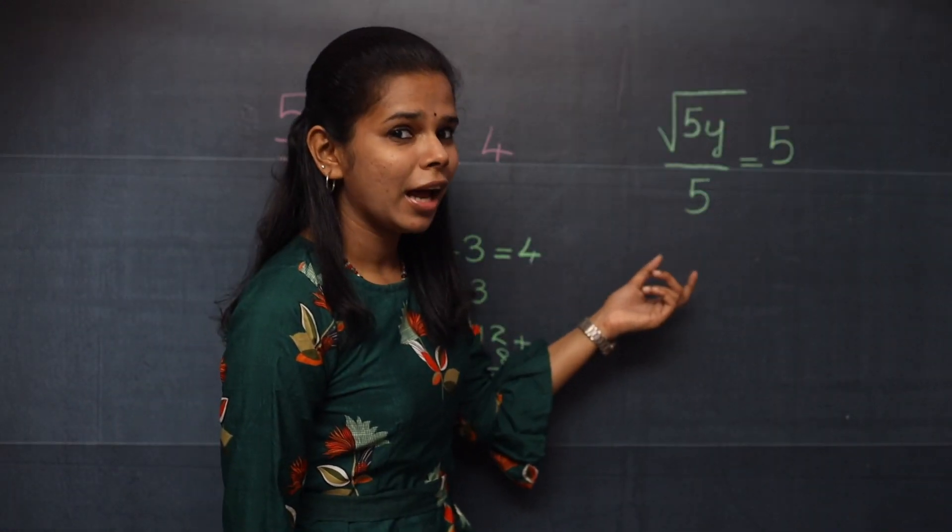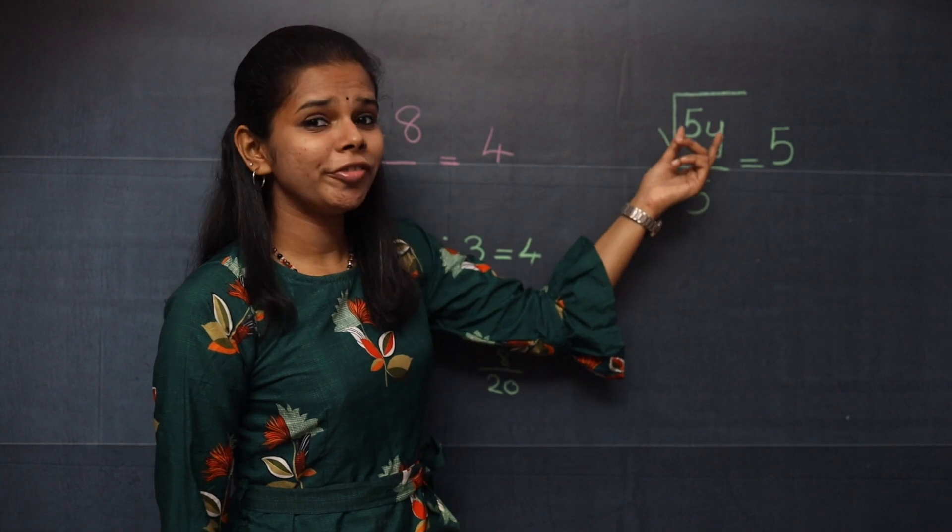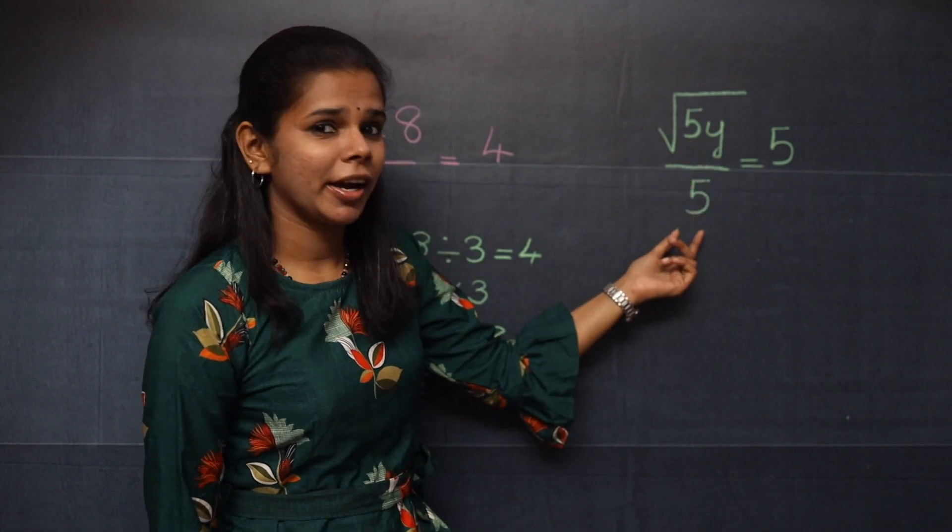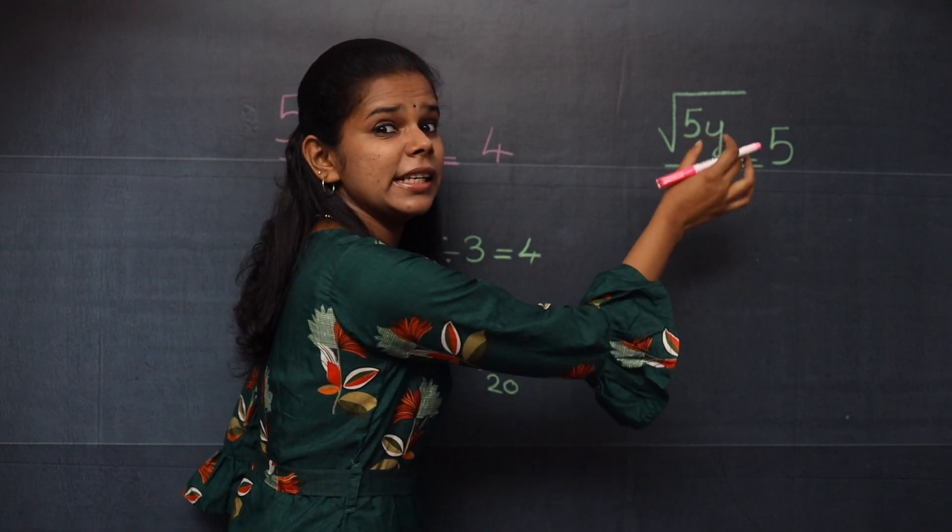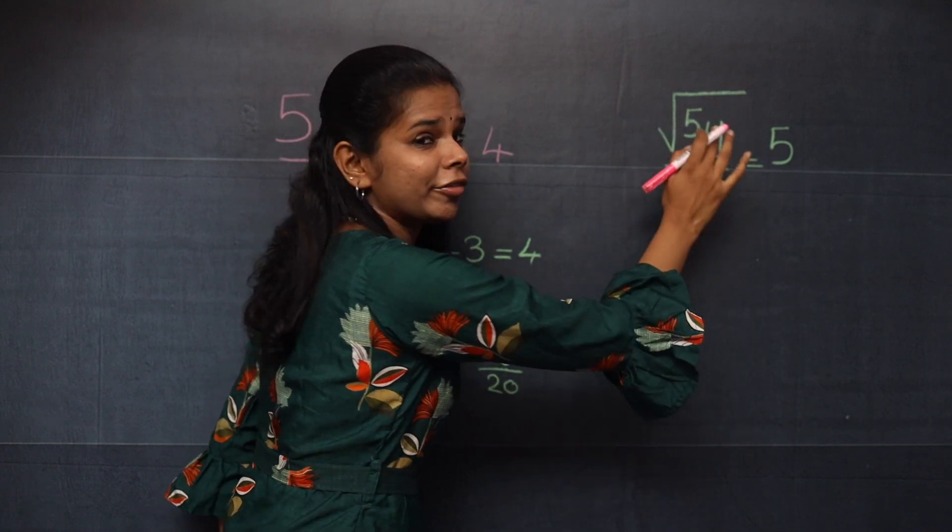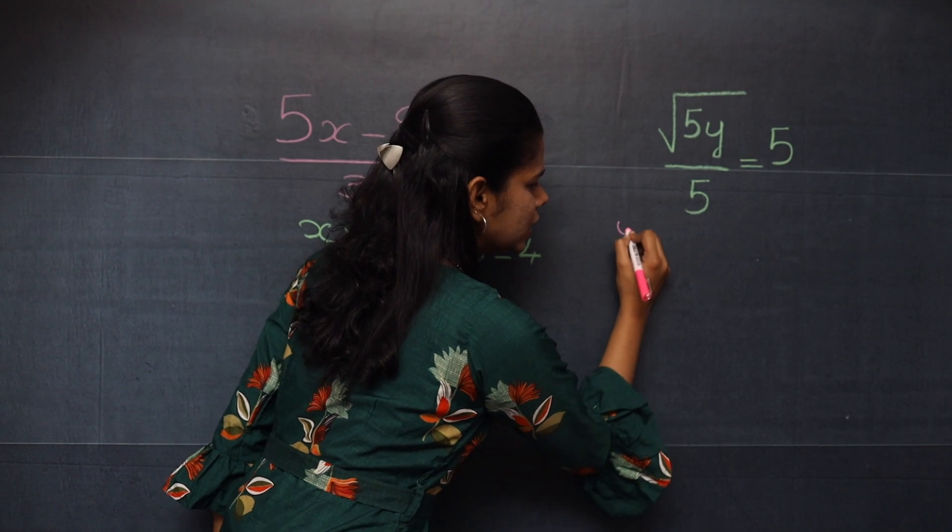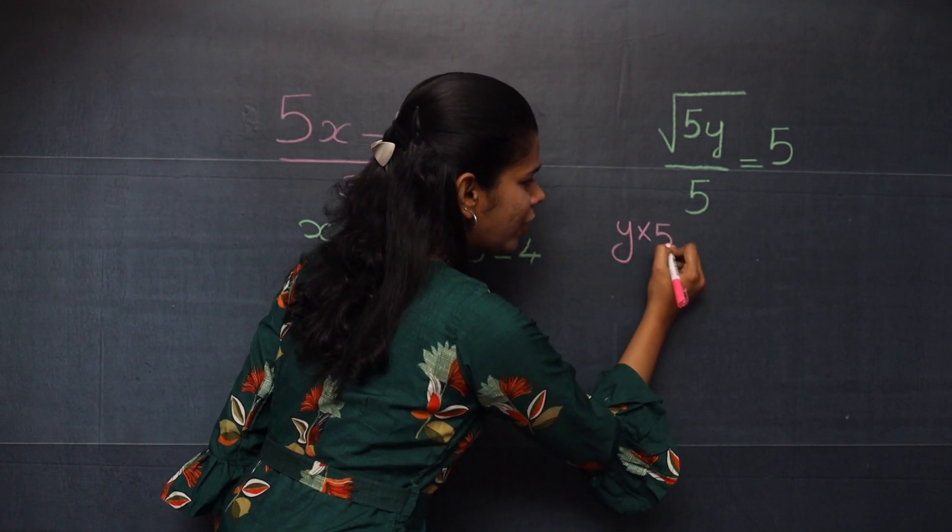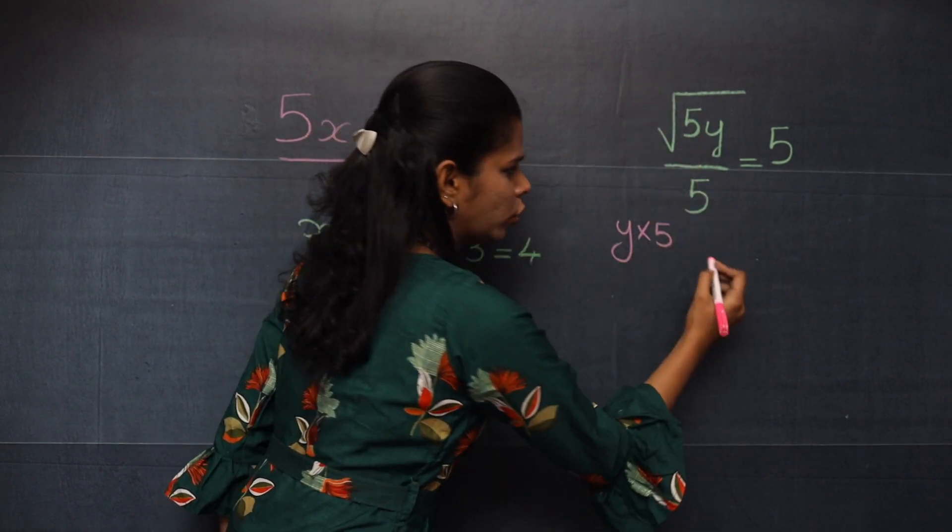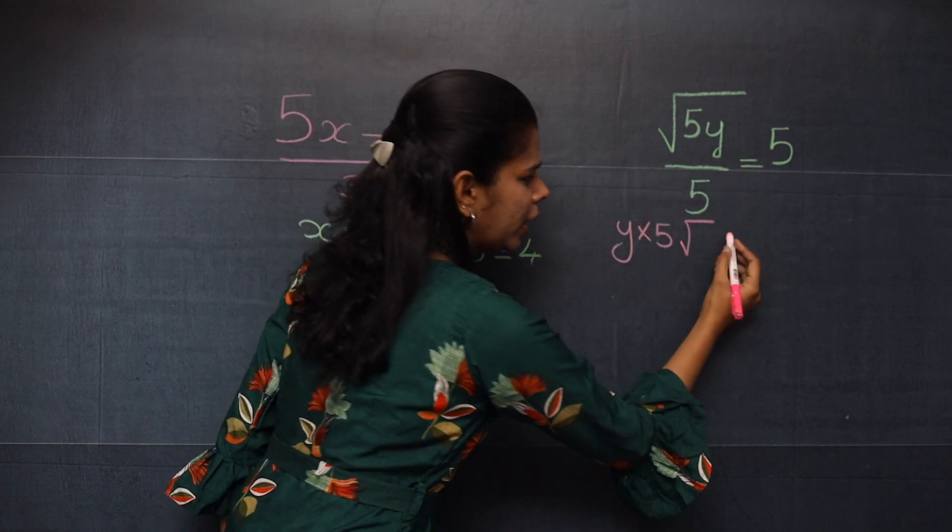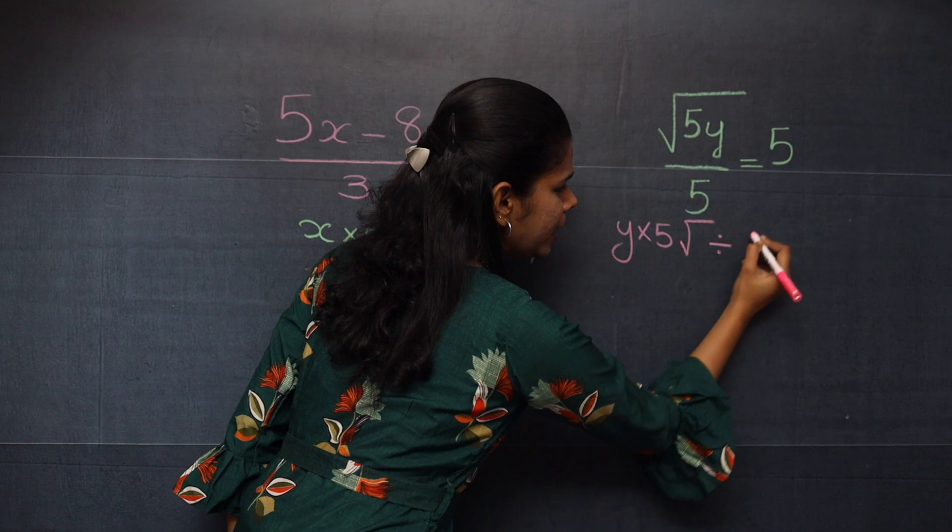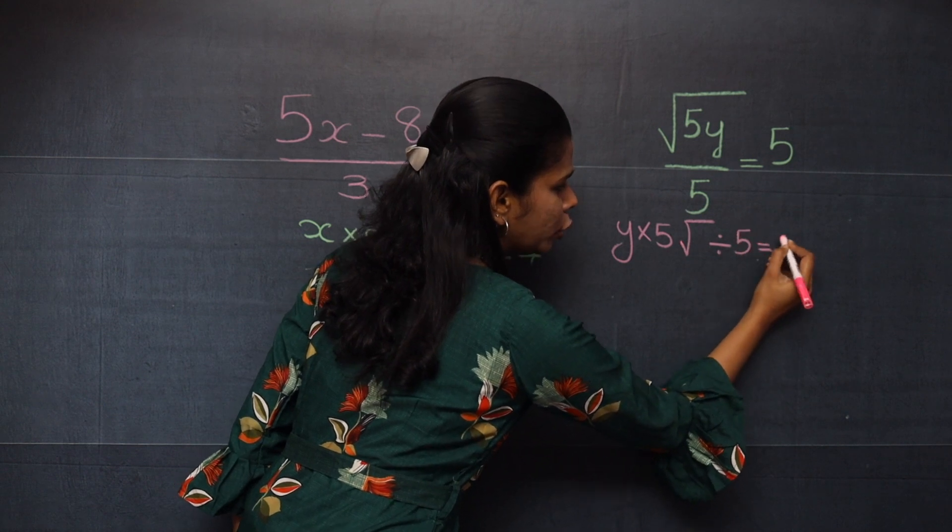Moving on to the last question. Root of 5y divided by 5 equal to 5. So here you will first write what is inside the root. You have 5y, you will write it as y into 5. And then you have a square root. So you will write like this. And then you have divided by, so a division symbol, then 5 equal to 5.